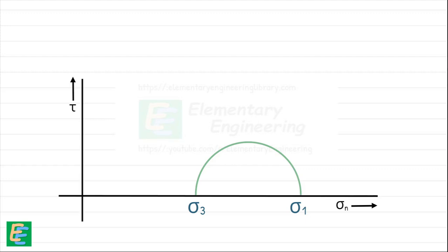Now, when the wall moves away from the soil, the horizontal stress sigma x starts decreasing. If the wall keeps moving away, sigma x keeps reducing until it officially becomes the minor principal stress, sigma 3.